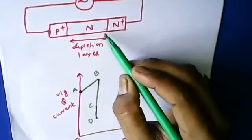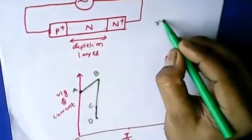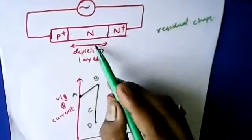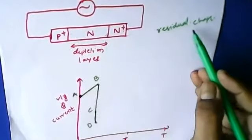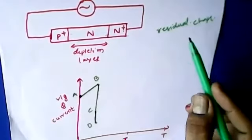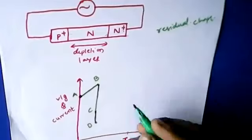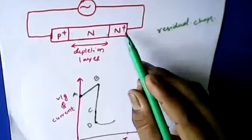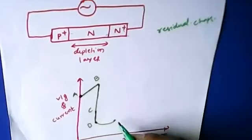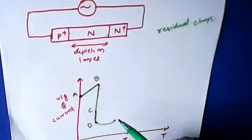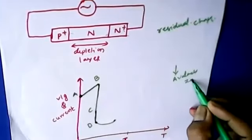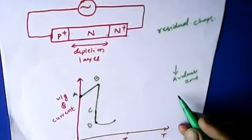Apart from the dense plasma, there are some residual charges that develop within the depletion layer. These must also be removed, but since they are fewer in quantity, the decrease in electric field is almost constant to remove these residual charges. Then the electric field falls below the avalanche zone.